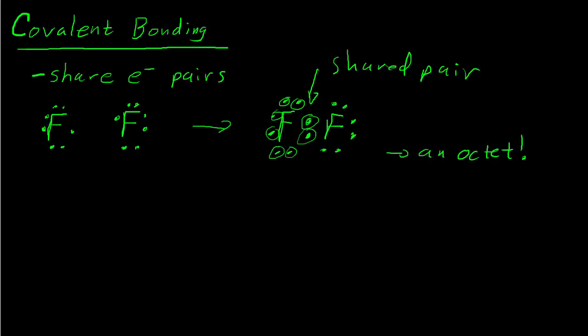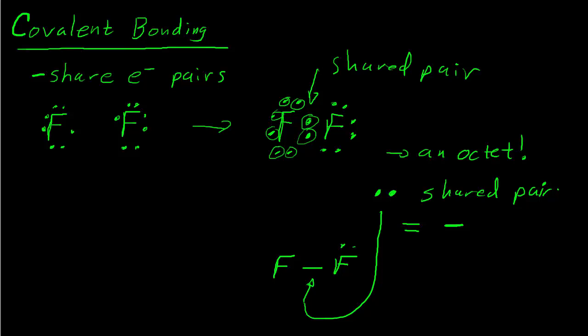A covalent bond happens when we share a pair of electrons between two atoms, and we can see when that happens using this Lewis dot model. This picture is sometimes called a Lewis dot structure. Oftentimes we represent a shared pair of electrons as a straight line, which represents a covalent bond. The other valence electrons are simply represented by dots.